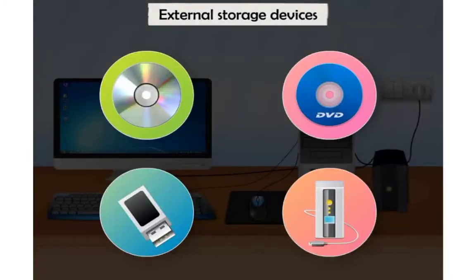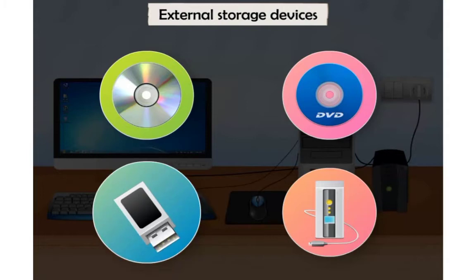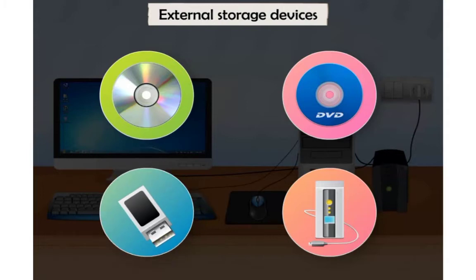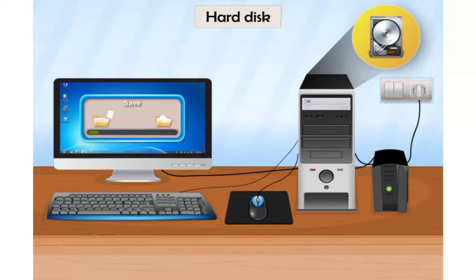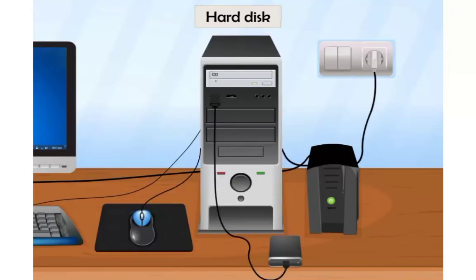For example, CD, DVD, pen drive, external hard disk, etc. Hard Disk: A hard disk is present inside the system unit. It is therefore the internal or primary memory of a computer. It stores all the files that you save. Sometimes, an extra hard disk can also be fixed outside a computer — it is called an external hard disk.